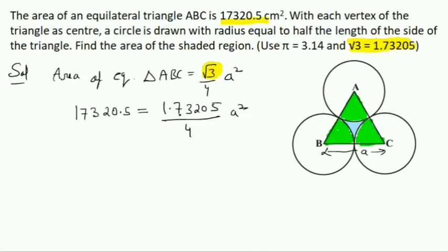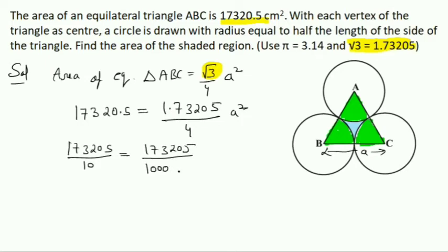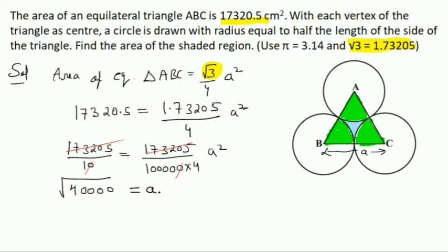Checking decimal places: 17320.5 has 1 decimal place, 1.73205 has 5. We write 1.73205/100000 × 4 × A² to align. After cross multiplication: 40000 = A², so A = √40000 = 200. Since 40000 = 4 × 10000 = (2 × 100)², A = 200 cm. The side of the triangle is 200 cm.